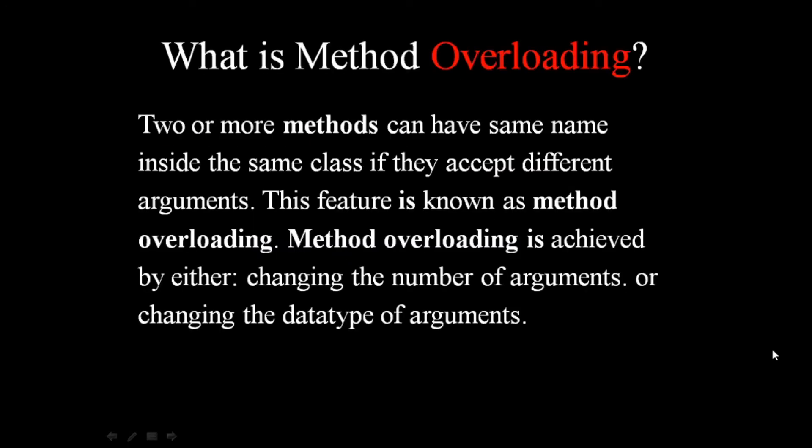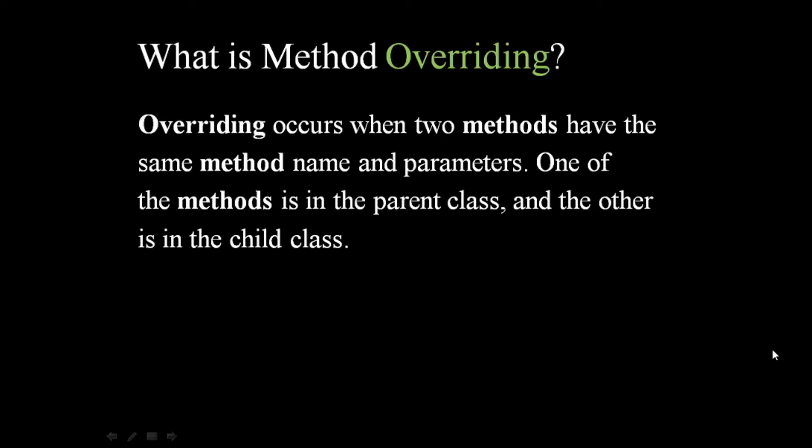So what is method overloading? If you have two methods which do the same thing, it's better they have the same name. But two methods cannot have the same name unless you overload them. Overloading is a process of declaring two methods with the same name but different method signatures. This is how two or more methods can have the same name inside the same class if they accept different arguments.